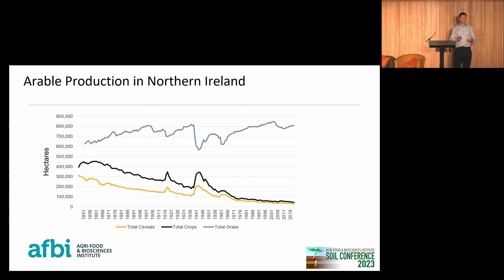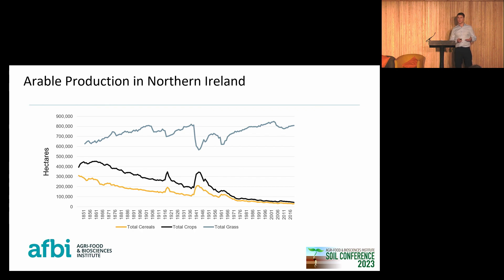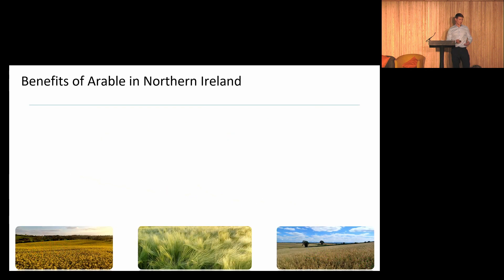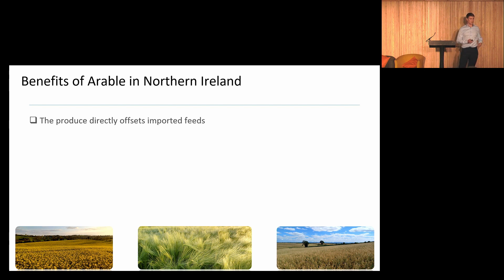This decline is attributed to the phasing out of the horse — meaning less reliance on oats and potatoes — and also intensification of livestock farms requiring more grass. Whilst grassland is better at sequestering carbon, arable does have considerable benefits and I believe it will grow in the future, with better integration of whole crops in their use on livestock farms.